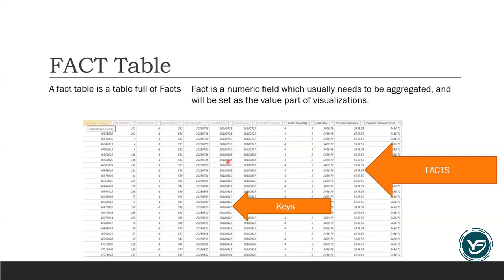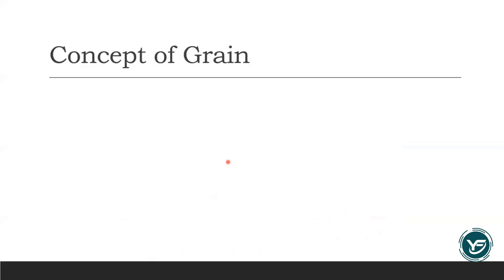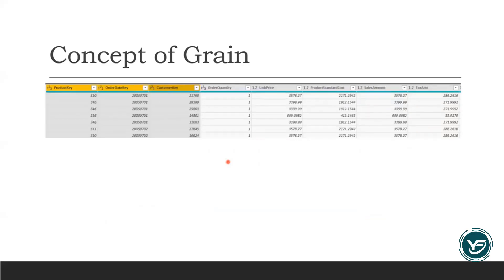This brings us to the concept of the grain in the fact table. Let's understand that with the following table. I have a table with three dimension keys coming in and five measures or aggregated values. I can visualize the data with respect to product key, order date key, and customer key, or with respect to any combination of these three keys. Three factorial means six combinations — I can visualize this data in six different ways. So the product key, order date key, and customer key are basically the grain of this fact table, and through these grains I can slice and dice the aggregated values.